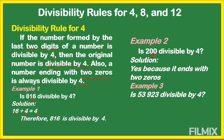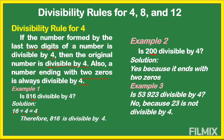Is 53,923 divisible by 4? We're going to look at the last two digits: 23. Is 23 a multiple of 4? The multiples of 4 are 4, 8, 12, 16, 20, 24 — 23 is not there. So 23 is not a multiple of 4, and 23 is not divisible by 4. So 53,923 is not divisible by 4.